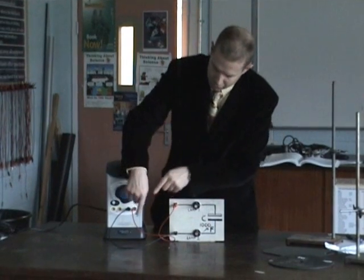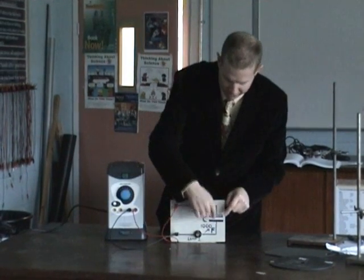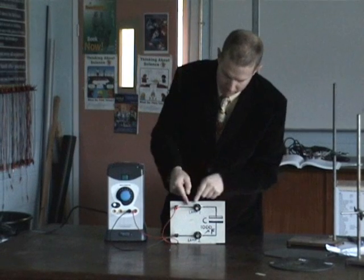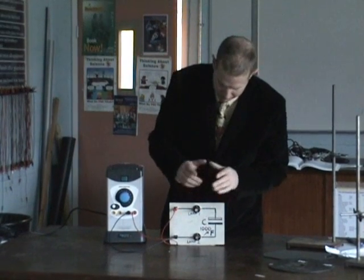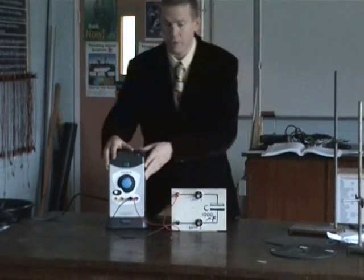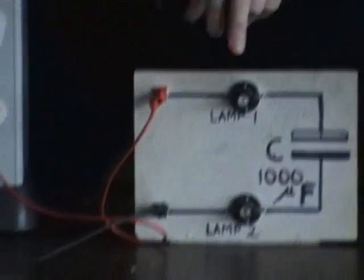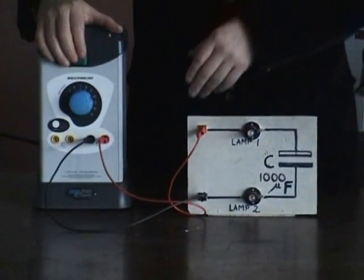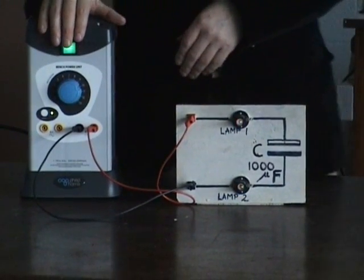When I do so, charge is going to run from the power supply onto the positive plate. Because it runs through the light bulb, you've got current going through it, so until the current stops, current will go through it and therefore it will light up. This, however, will just take a fraction of a second. So you're focusing on the light bulbs. Three, two, one, turn it on, and there it goes. It flashes.